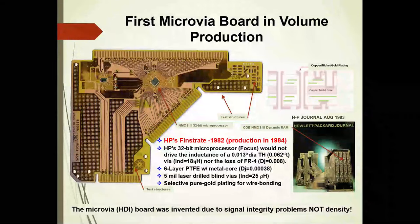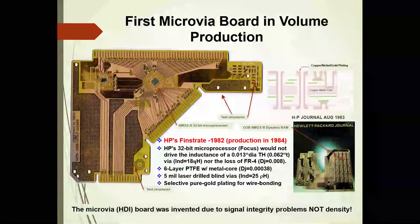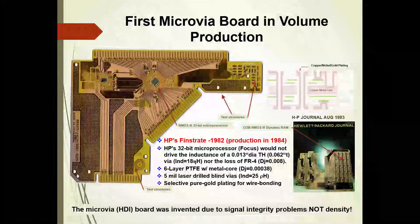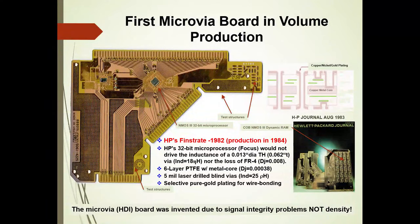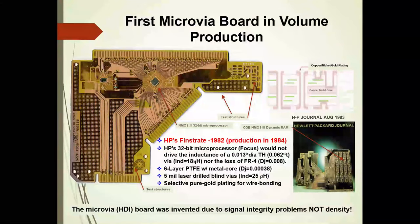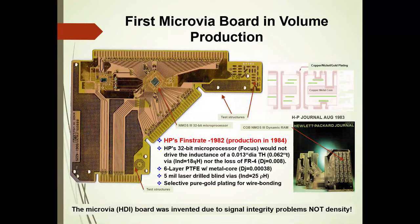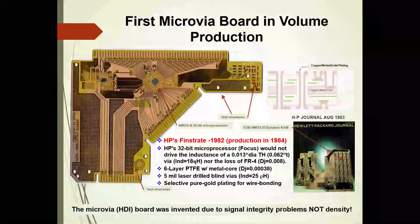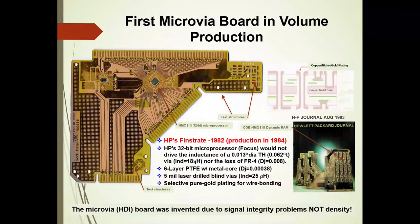On top of that, NMOS3 is really power hungry — it has the heat dissipation of a nuclear reactor. It was put into a cavity and thermally bonded to a metal core of the multilayer. Since it was going to be gold wire bonded, it had to be selectively pure-gold plated for wire bonding. This was the unfortunate discovery in 1982, and we had to invent a six-layer Teflon multilayer with a metal core, selectively gold plated with cavities and laser-drilled microvias.